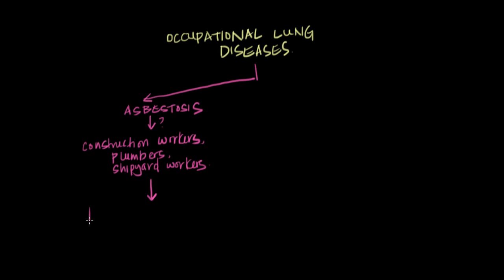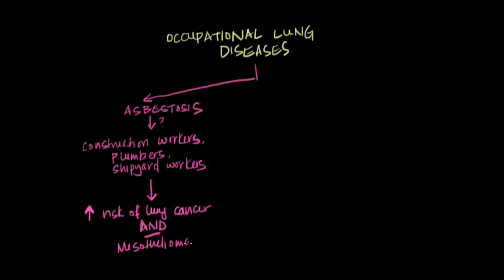Asbestosis is really important because it increases the risk of lung cancer and also increases the risk of mesothelioma. Mesothelioma tends to earn more media recognition, but it's actually lung cancer that's most likely to arise after asbestos exposure. A person exposed to asbestos is more likely to develop lung cancer than mesothelioma.